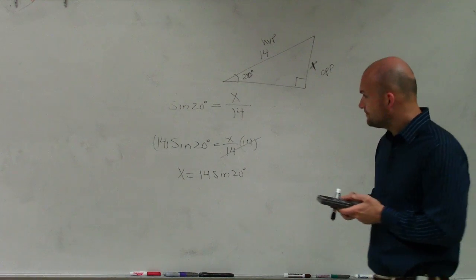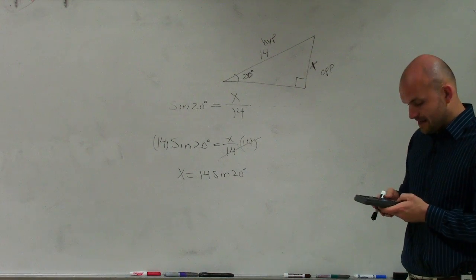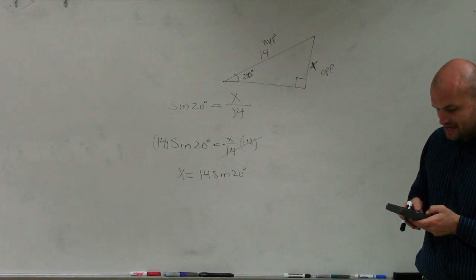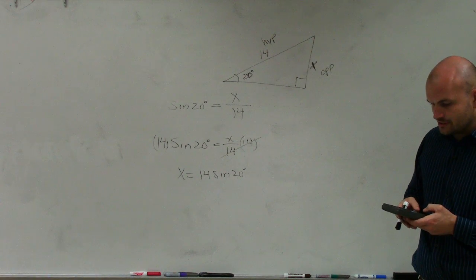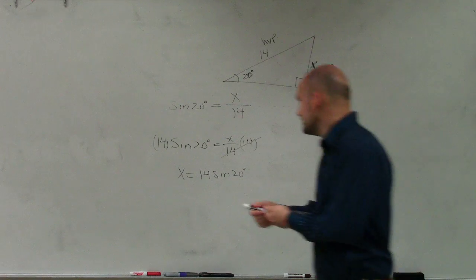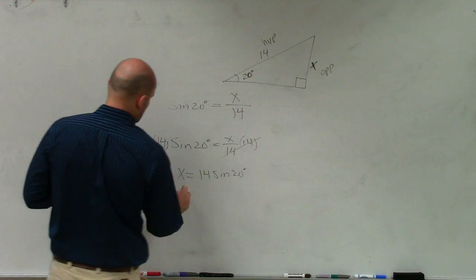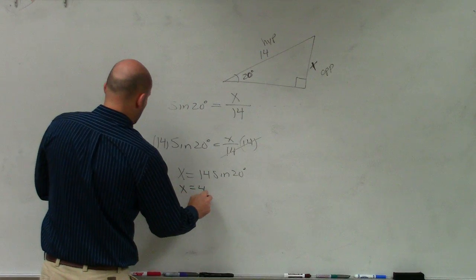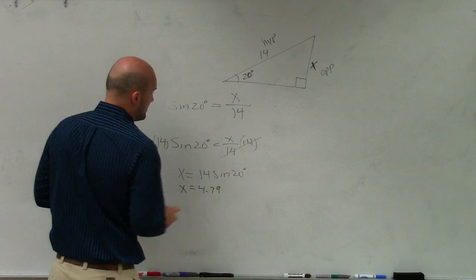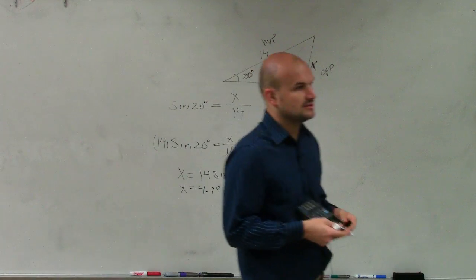To find our exact answer of that side length, I now just type in 14 times the sine of 20 degrees. And my answer is x equals 4.79. We'll round this to the hundredths in this class.